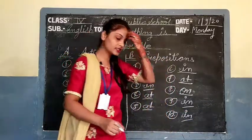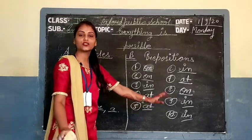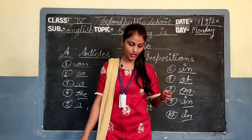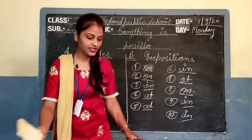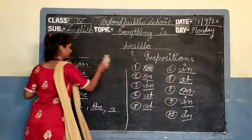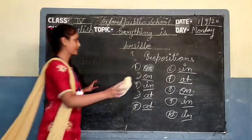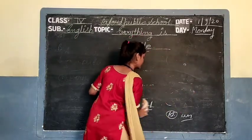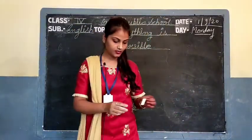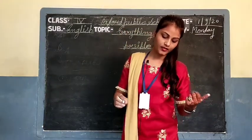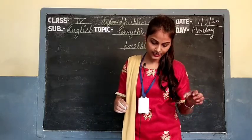We have done prepositions and articles. So these prepositions and articles you will fill in your book. Next is listening and speaking skills. Listen to the poem 'The Arrow and the Song' by Henry Wadsworth Longfellow and fill in the blanks.